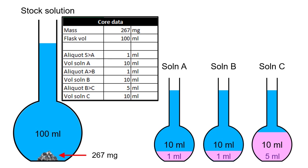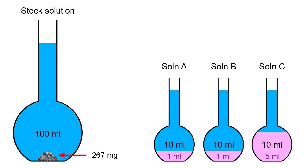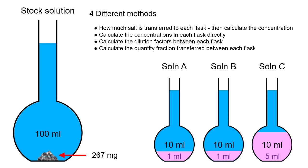It's worth explaining the shorthand I'm using to describe the aliquots — there's a little symbol after them in each cell where they're labelled. This is just a shorthand to help remember where the aliquot is coming from and where it's going to. So aliquot S to A means the aliquot is coming from the stock solution and going into flask A. Similarly, the next aliquot down is aliquot A into B — coming from solution A and going into flask B. These are the four different methods we're going to use to calculate the concentration in the final flask. The first method works out exactly how much salt is transferred from flask to flask in each aliquot, and uses that to calculate the concentration in each flask down the line.